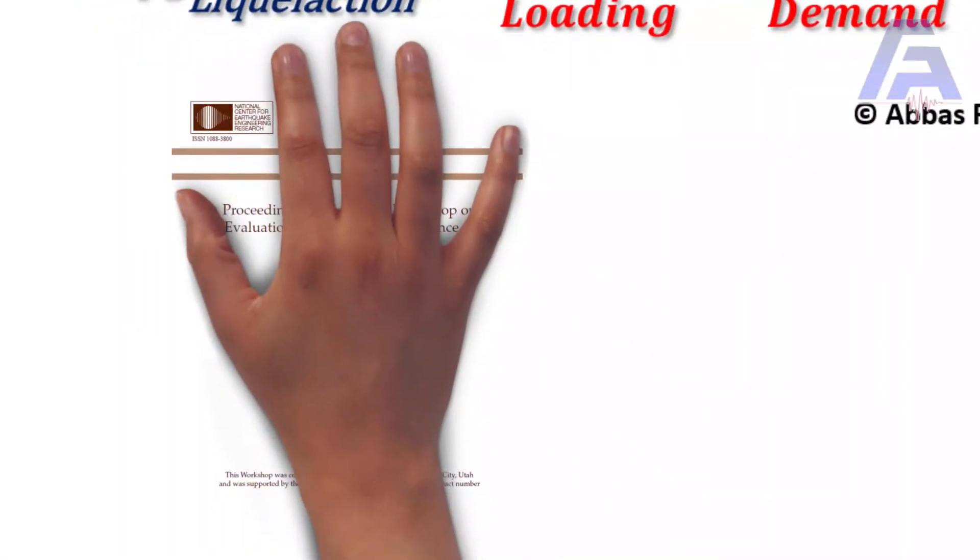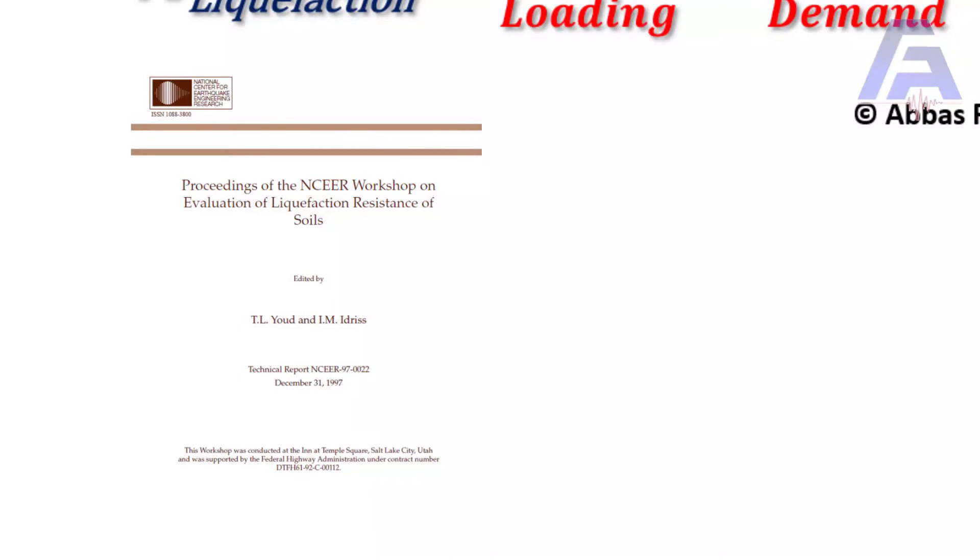The most famous reference to calculate CRR and CSR is the one proposed in NCER workshop in 1997 and later on modified and published by Professor Jude and his co-authors in 2001.